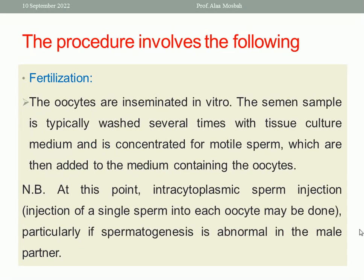After ovarian stimulation and oocyte retrieval, the next step is fertilization. The oocytes are inseminated in vitro. The semen sample is prepared, washed several times with tissue culture medium, and concentrated for motile sperm, then added to the medium containing the oocytes. For IVF this is sufficient; for ICSI, a single sperm is chosen and injected inside each oocyte. ICSI is especially used in cases of male factor when spermatogenesis is abnormal.